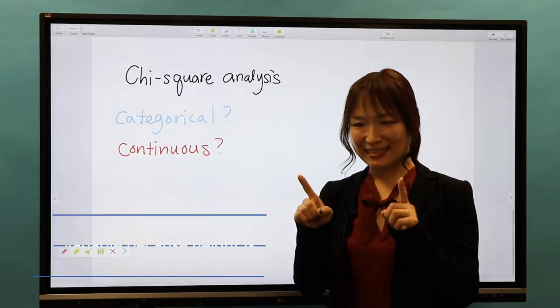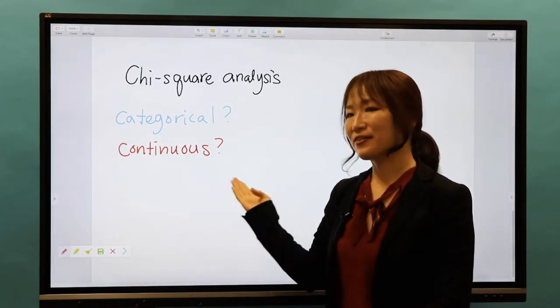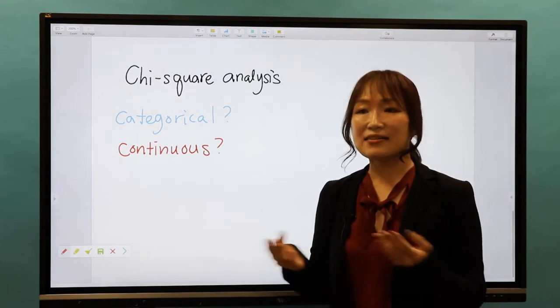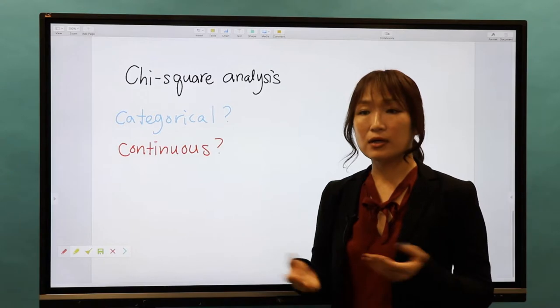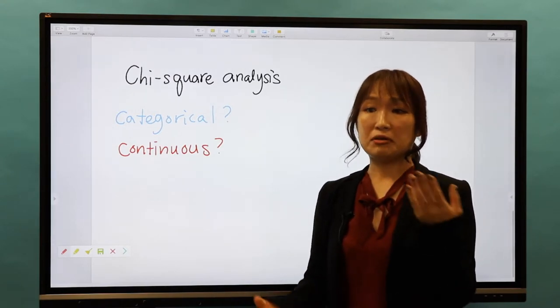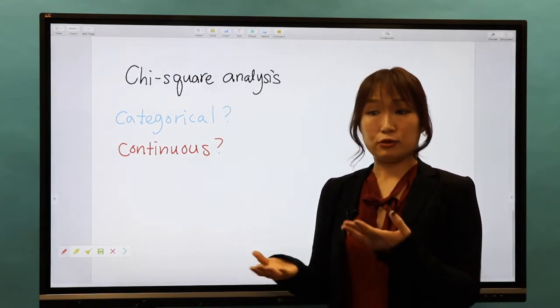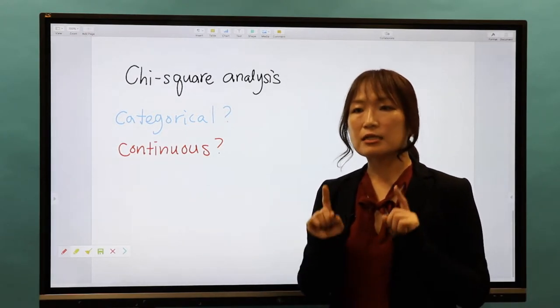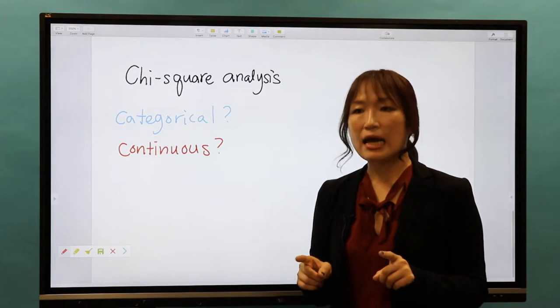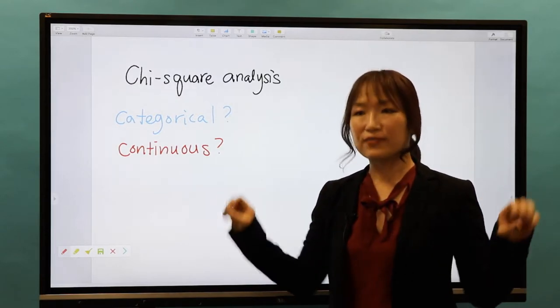Yes, that's right. Height is a continuous variable. It can take on any value between its minimum and maximum value. A student can be 152 centimeters, 200 centimeters, or anything in between. Each centimeter is part of a continuum, so it's a continuous variable.